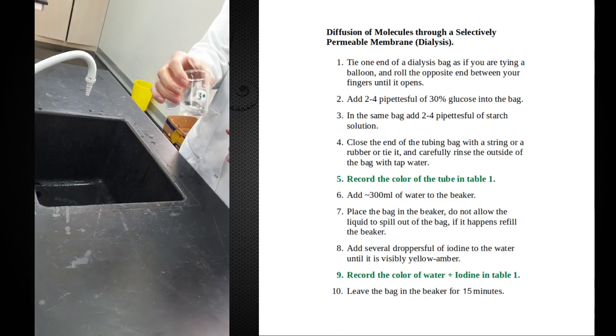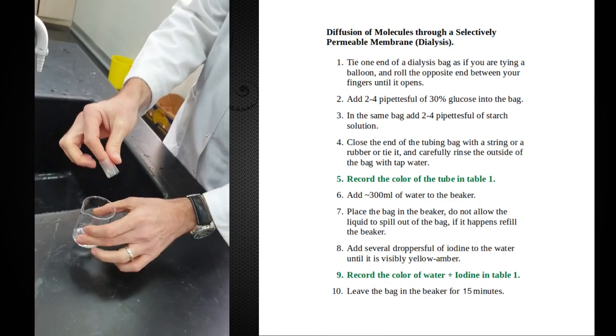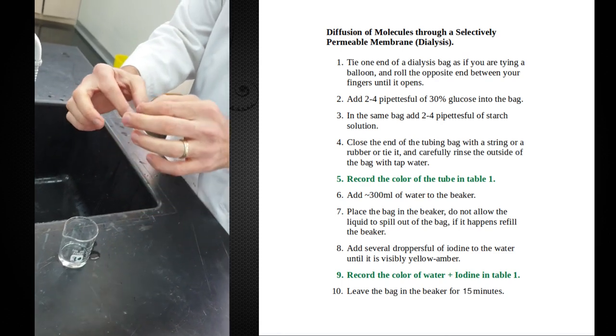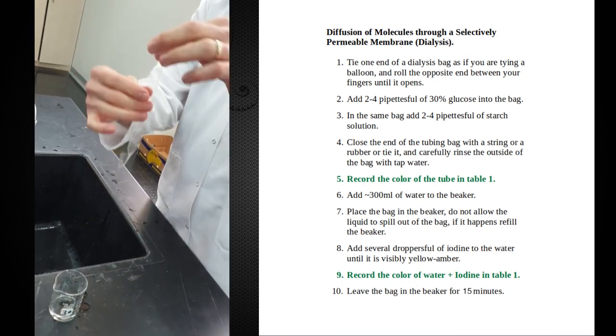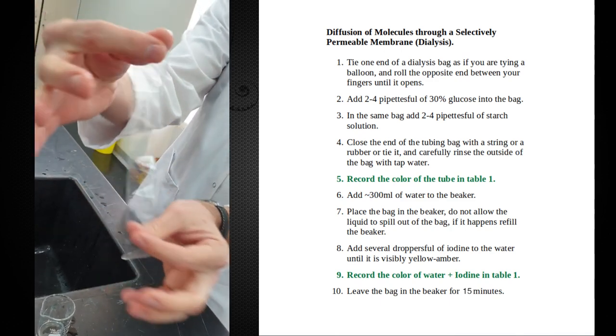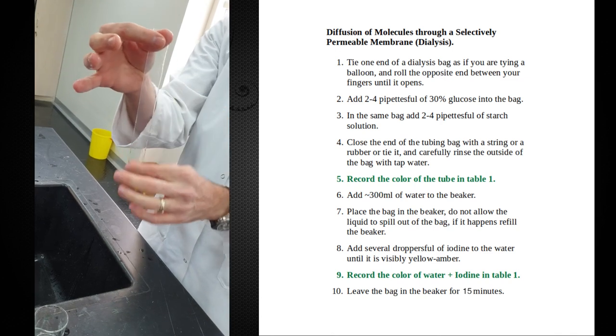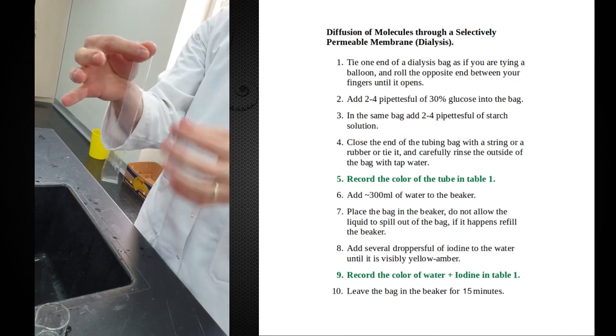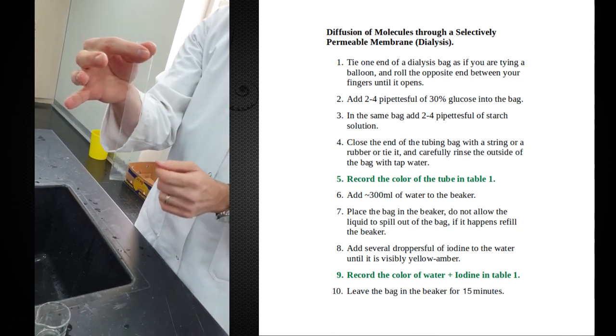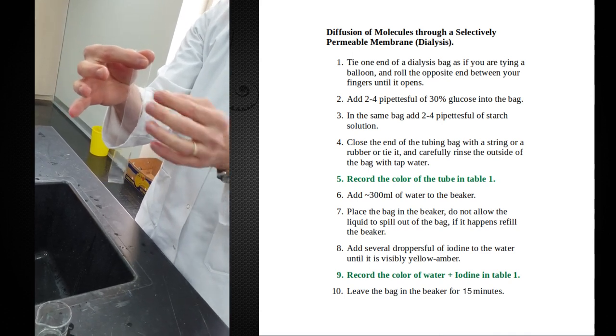Inside these beakers what we have is a thin piece of what feels like plastic. It looks very flat, there's really not much to it, just a long piece of plastic it seems. But it's actually tubing and it's special in that there are small holes that will allow certain sized molecules to pass through fairly easily and other ones will not pass through.